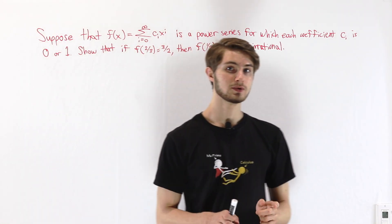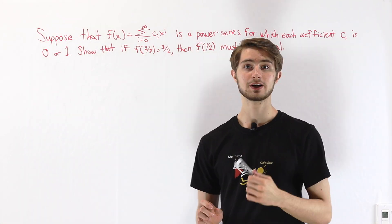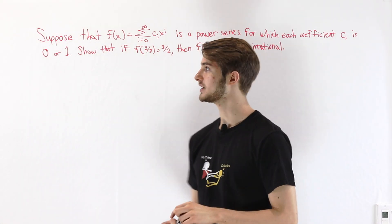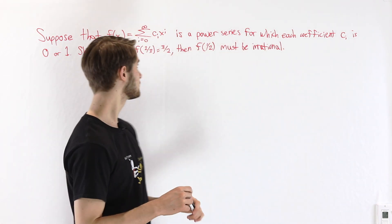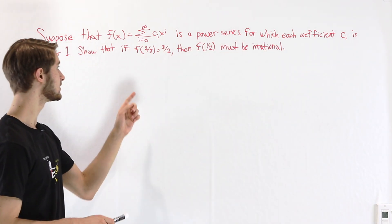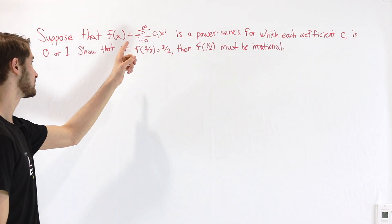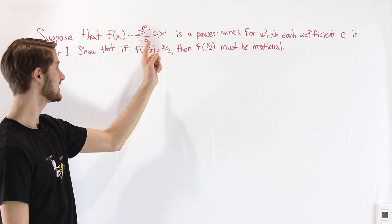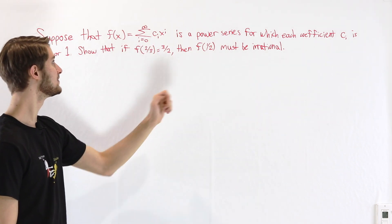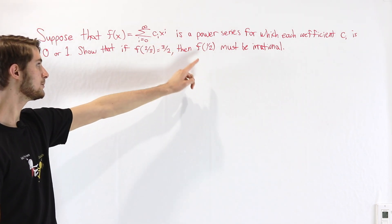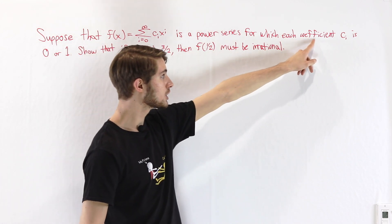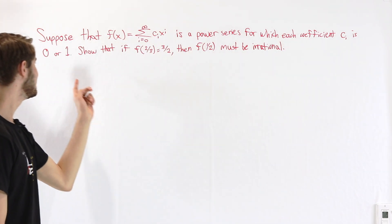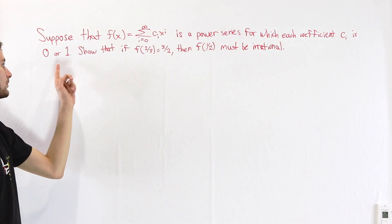We are going to do the 2017 Putnam Competition Problem B3. Suppose that f(x), which equals the sum from i equals 0 to infinity of c sub i times x to the i, is a power series for which each coefficient c sub i is 0 or 1.